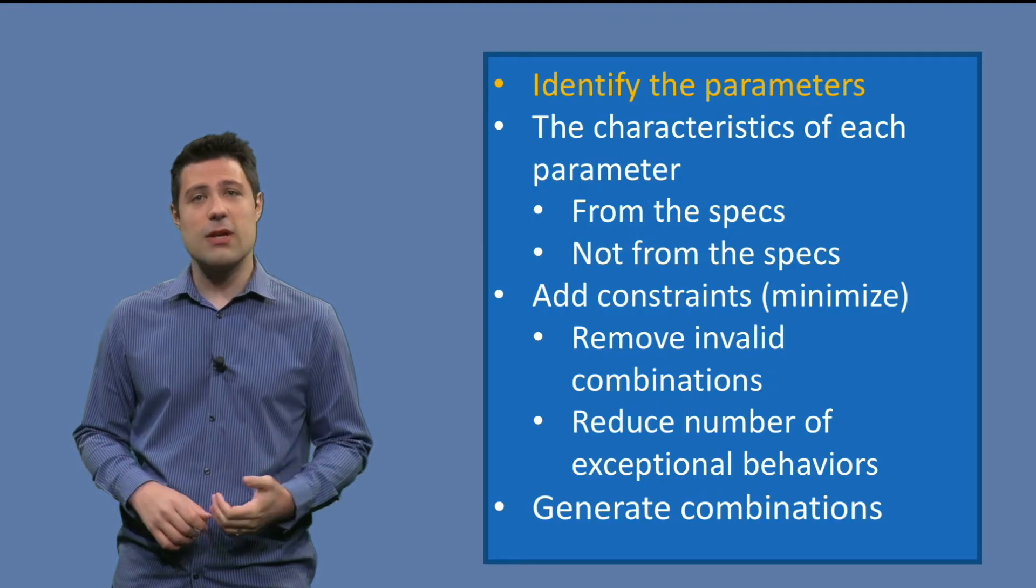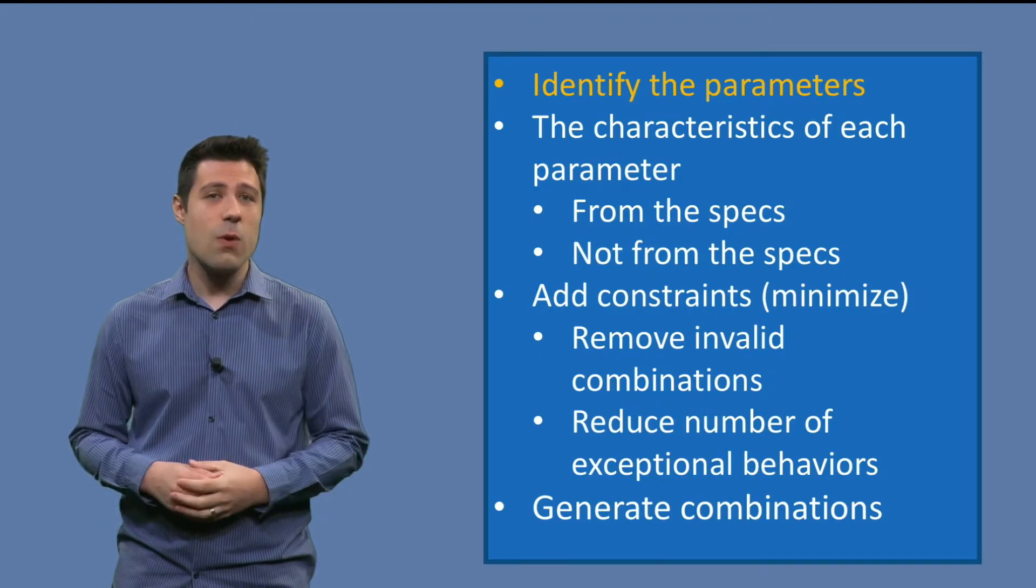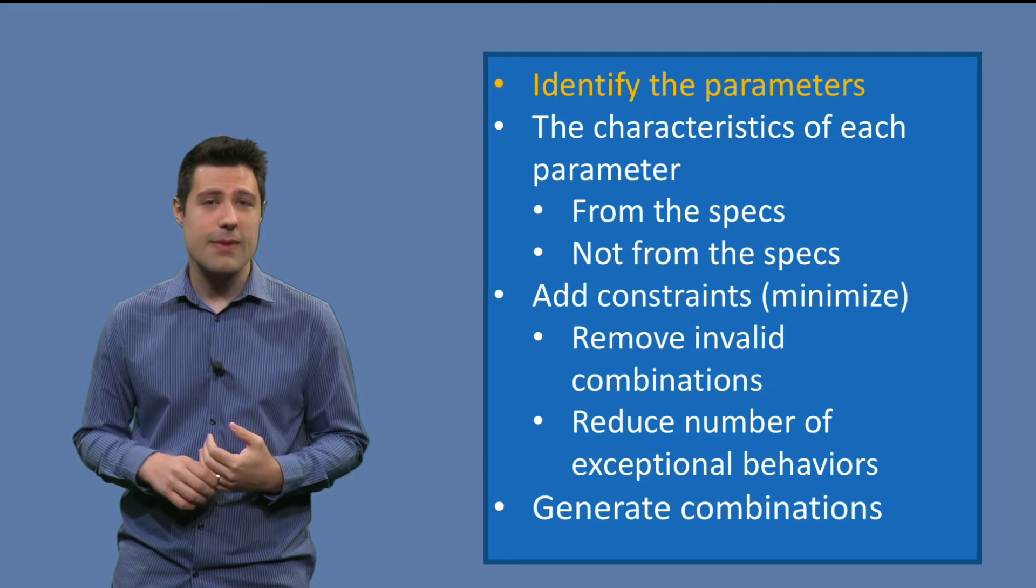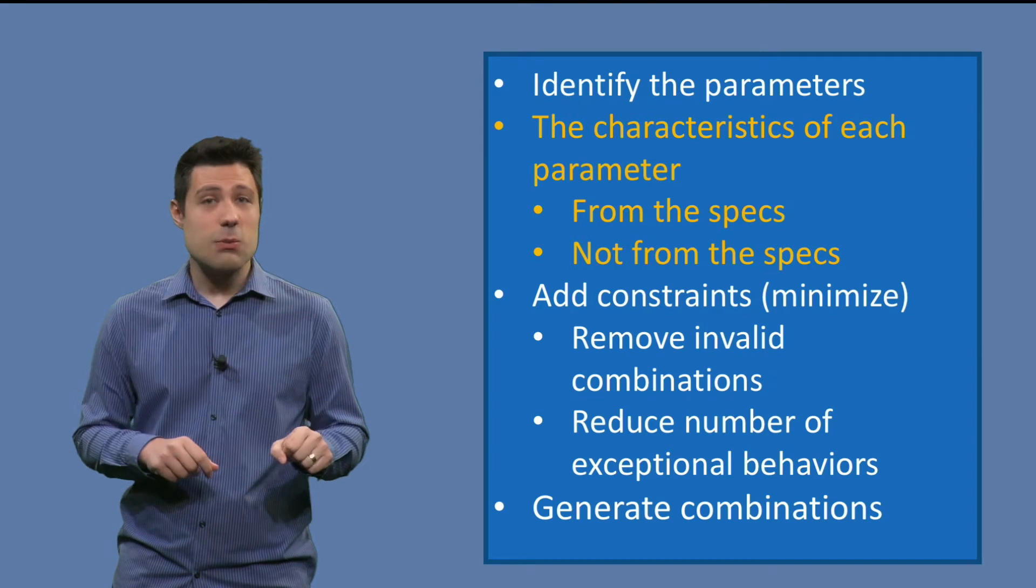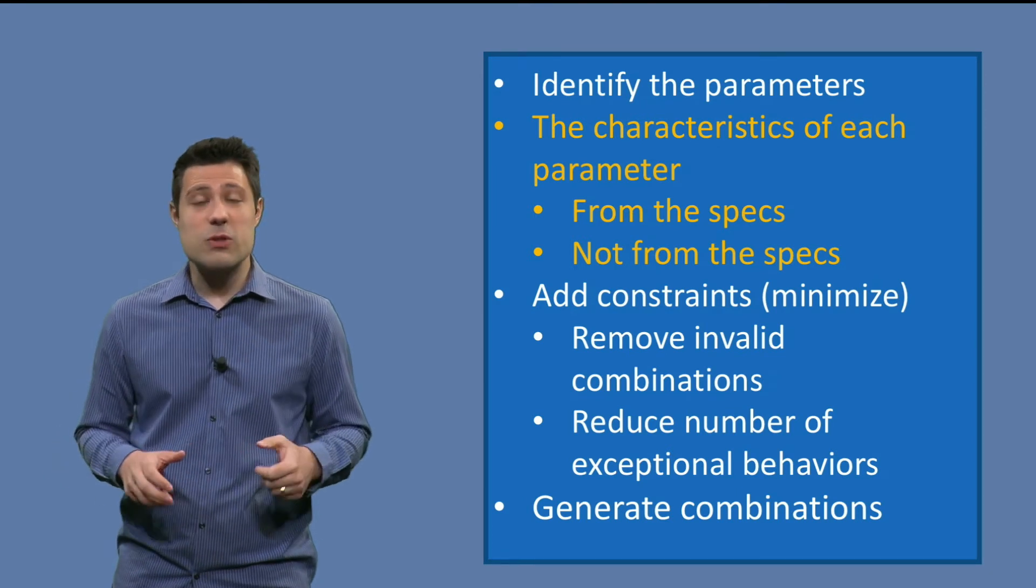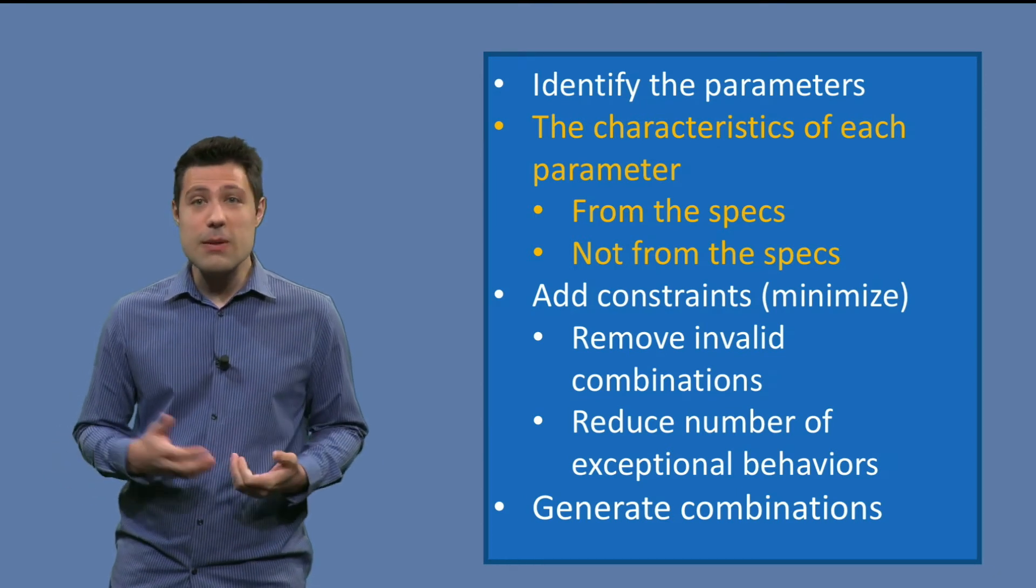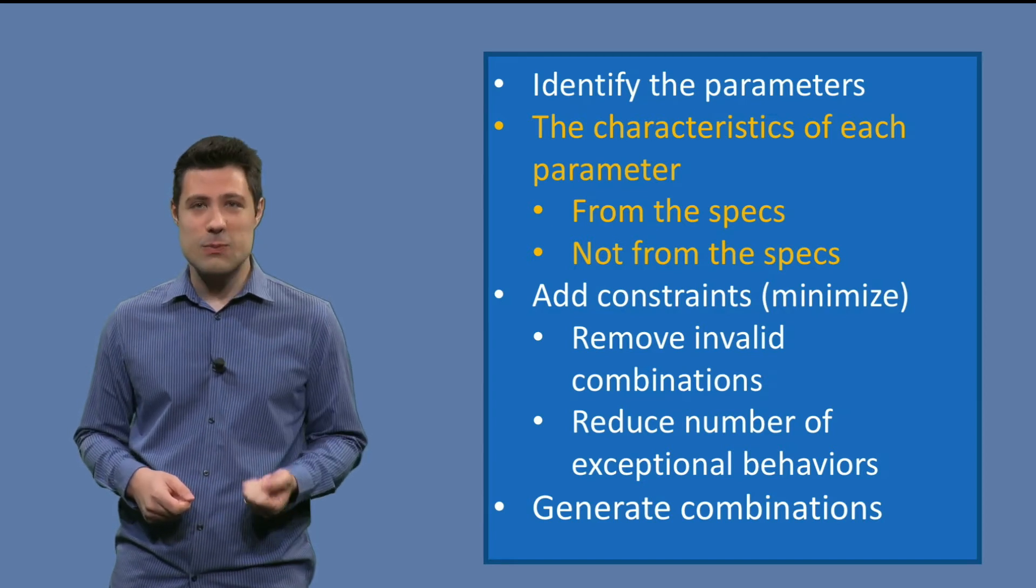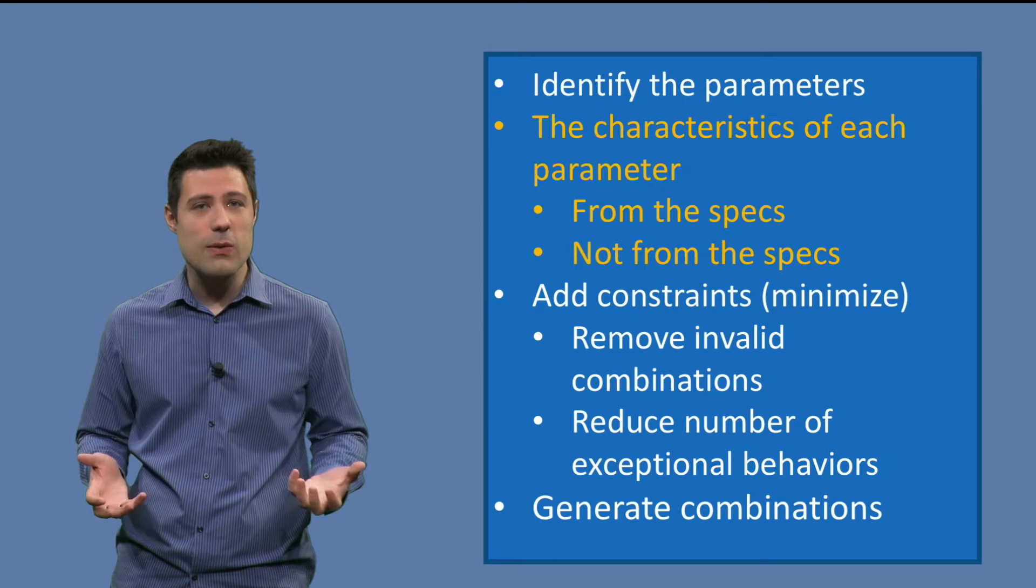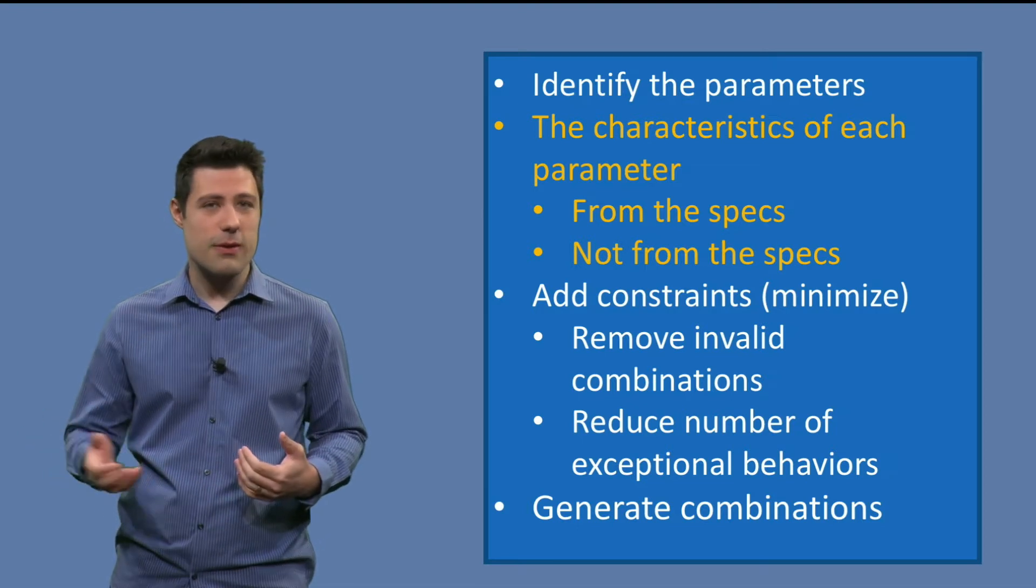The first thing is we identify the parameters, or the inputs of our program. Then we think about the characteristics of each of those parameters. Some of these characteristics we can get from the specification. For example, number is always positive. But some others, we can clearly get them from the specification. For example, input cannot be null. That is why looking beyond the requirements is important.